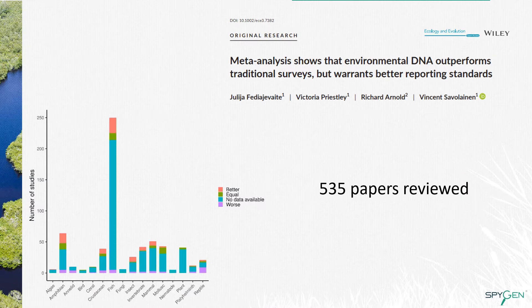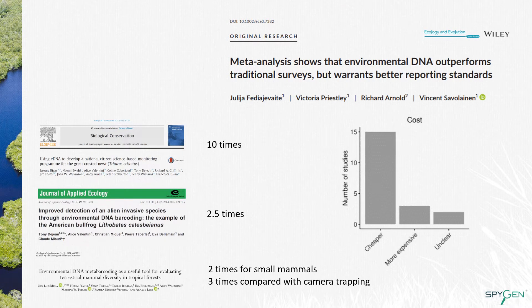The performance of eDNA surveys can be comparable with or better than traditional surveys in many cases. In a meta-analysis on more than 500 papers on eDNA — covering both eDNA barcoding and eDNA metabarcoding approaches, and several taxonomic groups ranging from microorganisms to vertebrates and invertebrates — it was found that in most cases, eDNA survey is cheaper than traditional methods. For example, for Great Crested Newt in the UK, the use of eDNA is 10 times cheaper than traditional methods.